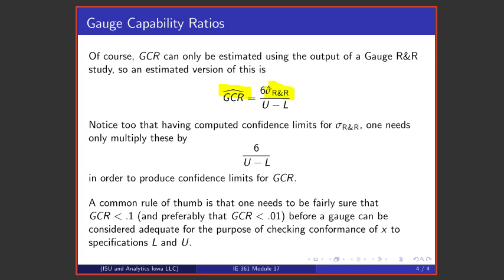Further, notice that if I can make confidence limits for σ_R&R using the material of the last module, I can take those confidence limits and simply multiply them by 6/(U-L) to obtain confidence limits for the gauge capability ratio.